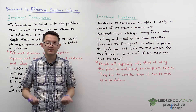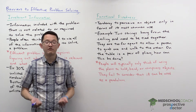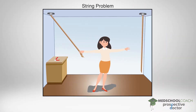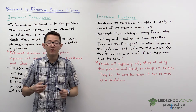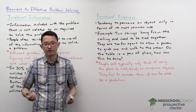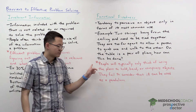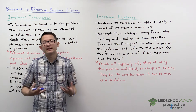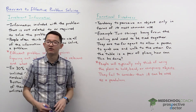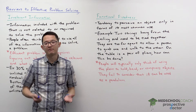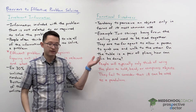To understand how this works, let's consider the example of the string problem. Looking at this diagram: you have two strings that hang from the ceiling that need to be tied together. They are too far apart to allow a person to grab one and walk to the other. On the table is a pair of pliers. Most people aren't able to figure out the answer to this problem, and the main reason why is because when they look at the pair of pliers, they only think of it as a tool that can be used to hold, bend, or compress objects, and they don't see how that can possibly be useful for solving this string problem.